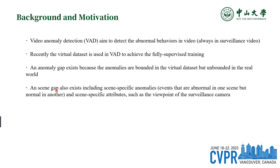Another challenge is the scene gap. This refers to scene-specific anomalies — events that may be considered abnormal in one scene but normal in another. For instance, a person running in a park may be normal behavior, but the same behavior in a shopping mall may be considered abnormal. Additionally, scene-specific attributes such as the viewpoint of the surveillance camera can also affect model performance.